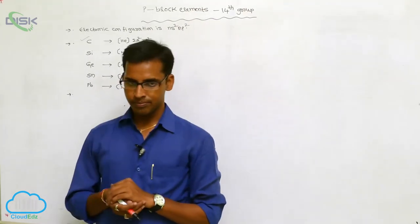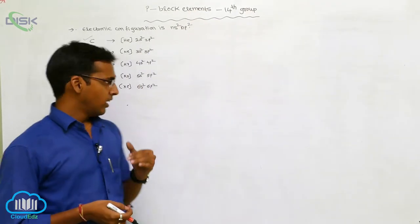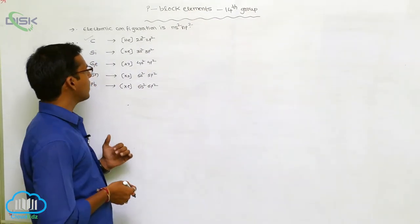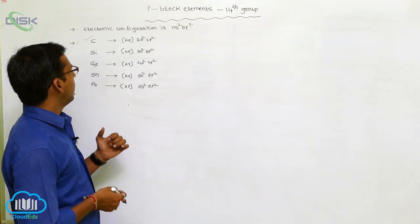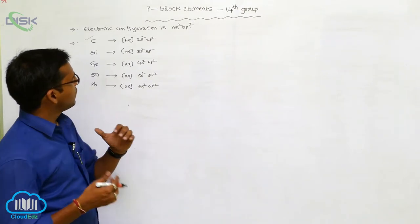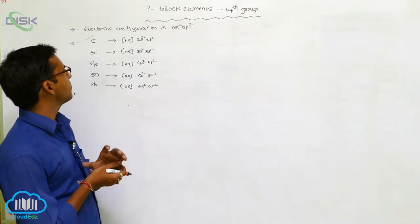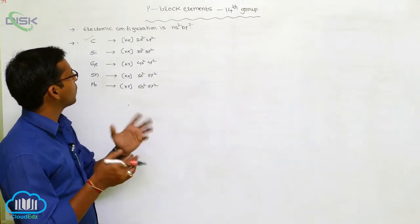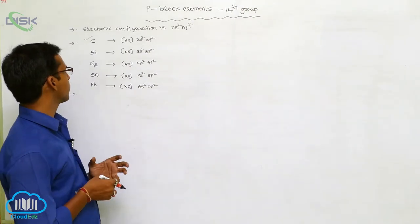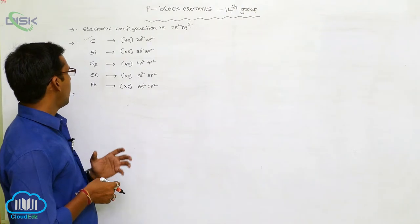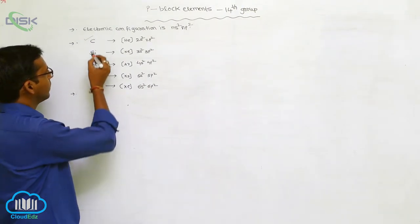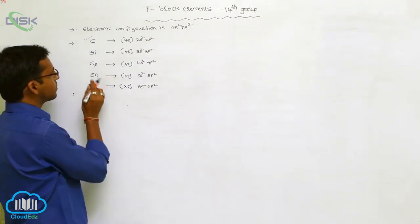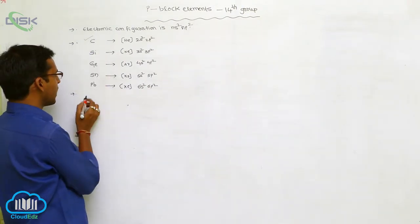Carbon is available in different allotropic forms. This is regarding its electronic configuration.